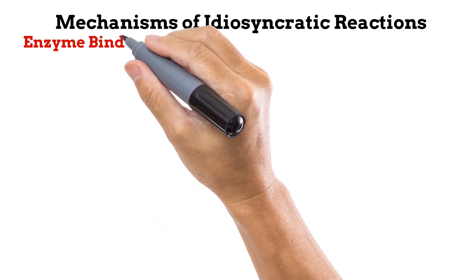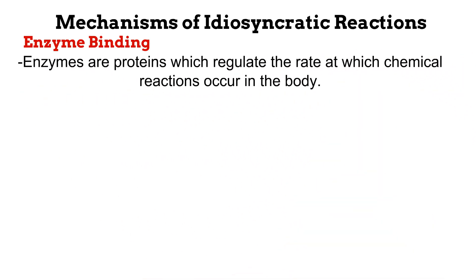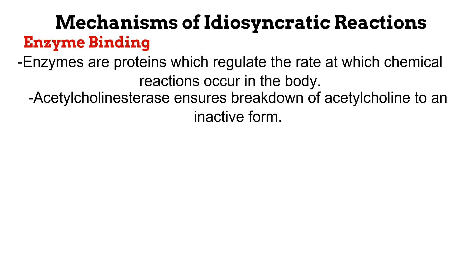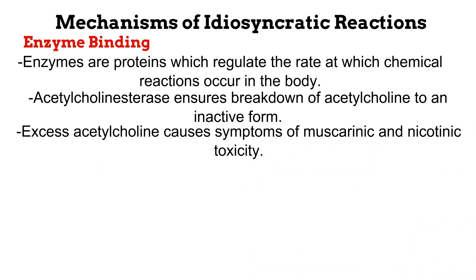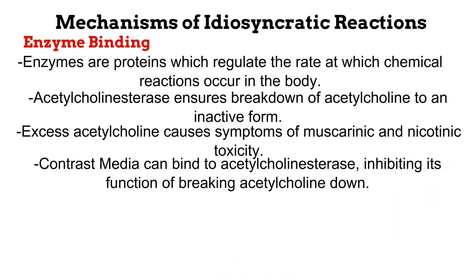Another way through which experts believe dose-independent reactions occur is enzyme binding or enzyme inactivation. Enzymes are proteins that regulate how fast chemical reactions occur in the body. Processes like the breakdown of food and buildup of energy are chemical reactions. Enzymes make sure these processes do not happen too quickly or too slowly. One example of an enzyme is acetylcholinesterase. It ensures that the neurotransmitter acetylcholine is broken down into an inactive form. This is important because when there is excess acetylcholine in the body, certain negative effects — called muscarinic and nicotinic toxic effects — are experienced. Now, contrast media is a weak binder of proteins, and it can bind to the enzyme acetylcholinesterase, rendering it useless. The acetylcholinesterase will no longer be able to break acetylcholine down, causing a buildup of excess acetylcholine in the body and leading to muscarinic and nicotinic toxicity symptoms.